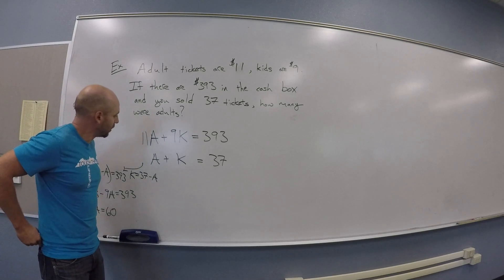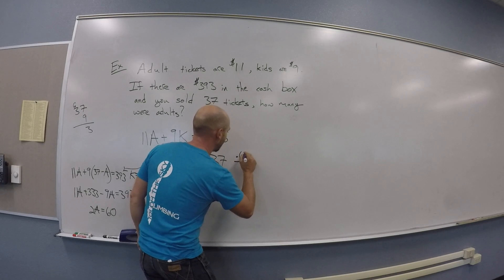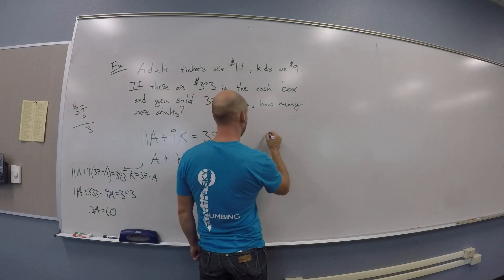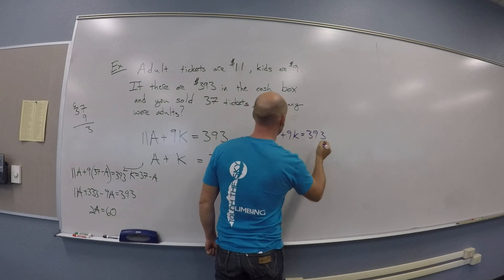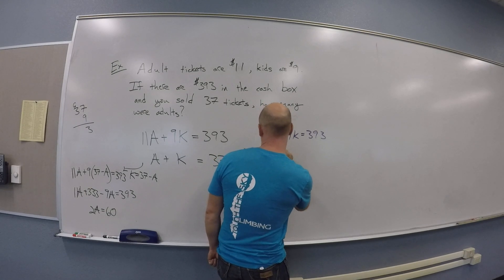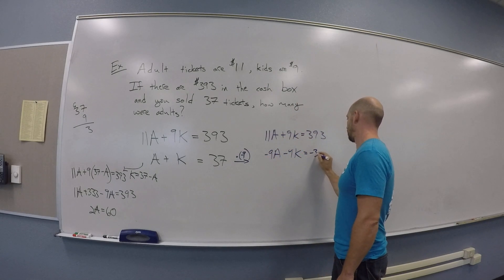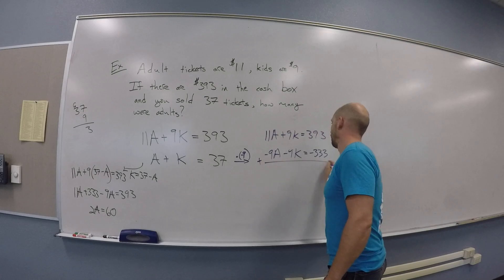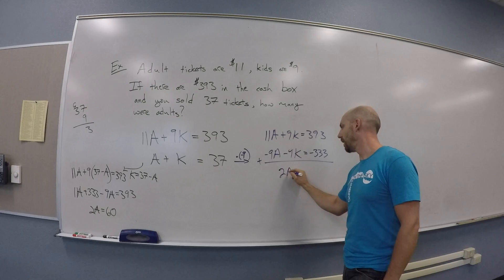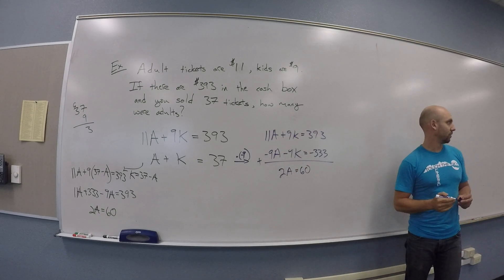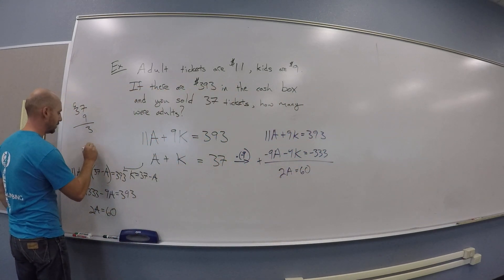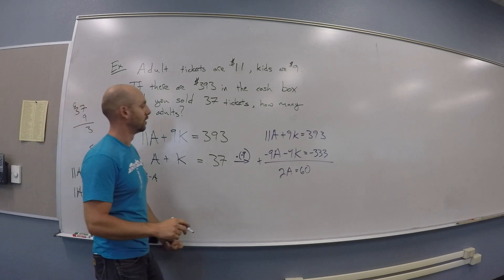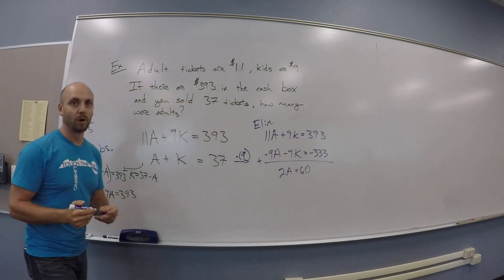Another method you could do is multiply this whole bottom equation through by negative 9, and leave the top equation alone. So you get 11a plus 9k equals 393, and your second equation becomes negative 9a minus 9k equals negative 333. Then you add both together — the k's will drop — and you get 2a equals 60 again.